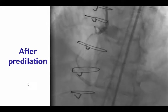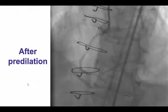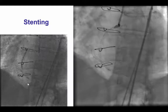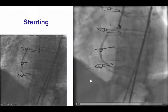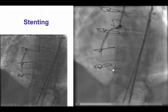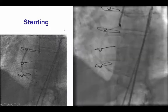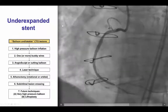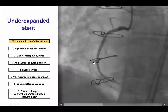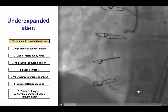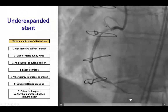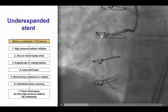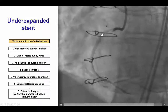After predilation, there was some restoration of antegrade flow. Stent placement was performed with guidance from contralateral injection in order to preserve as much as possible the distal bifurcation. After this was achieved, we had excellent TIMI 3 antegrade flow in both the PLV as well as the posterior descending artery. However, the proximal right coronary artery stent remained underexpanded.